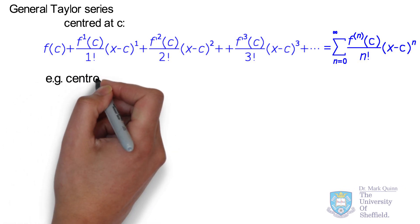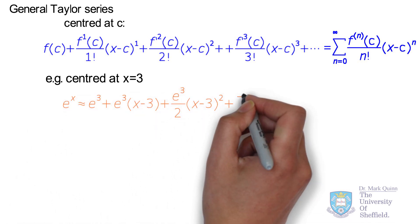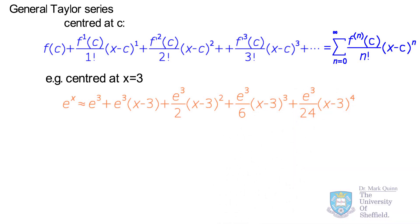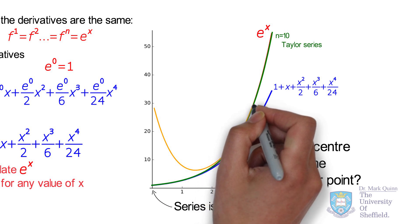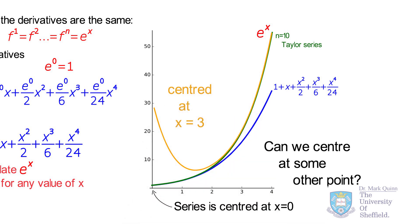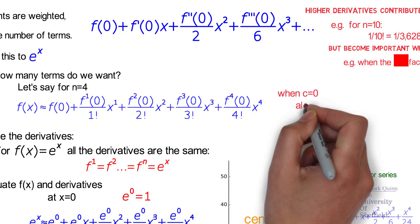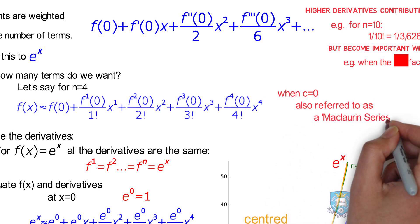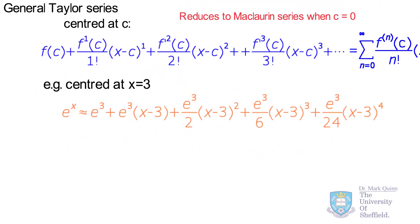For example, our approximation of e^x can be centered at x equal to 3. For e^x all the derivatives are e^x, so we have numerous instances of e to the 3. Visualizing this, we can see that the Taylor expansion centered at x equal to 3 diverges at x equal to 0 but converges to the exact value near x equal to 3. Hence we can tailor our series to center at any point of interest. When a Taylor series is centered at zero this is sometimes referred to as a Maclaurin series, and the general Taylor series reduces to the Maclaurin series when c equals zero.